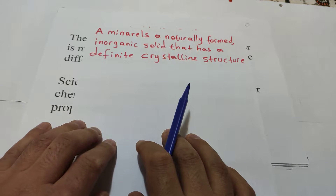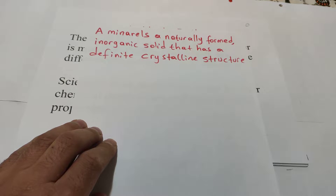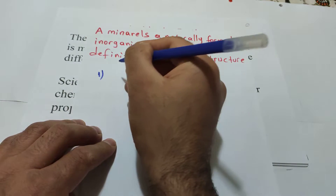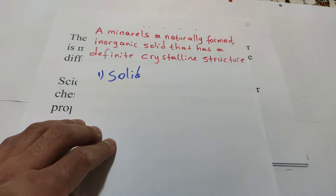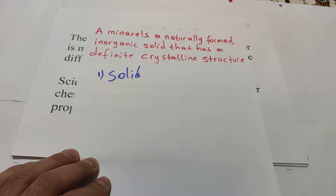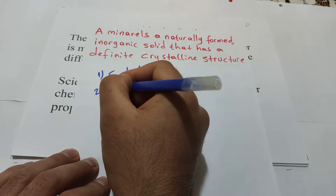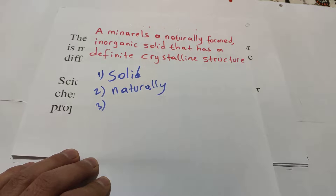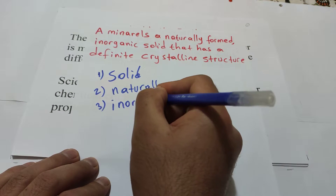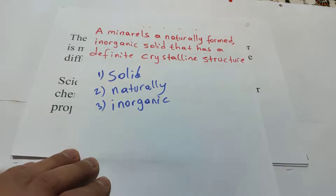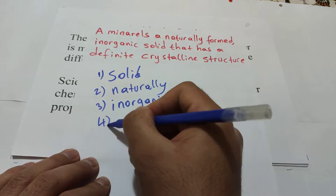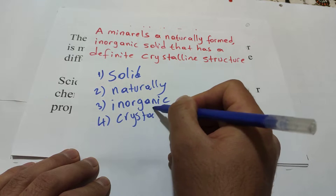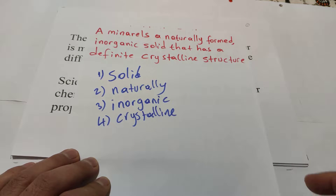Who can tell me four properties of mineral? Remember that. Four properties of mineral. First one: solid. These are the first properties of mineral. What about the second property of mineral? Naturally. Who can tell me the third property of mineral? Inorganic. What about the fourth property of mineral? Crystalline shape, or crystalline structure.